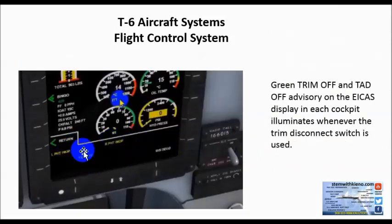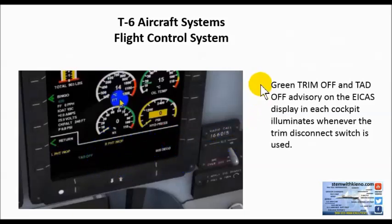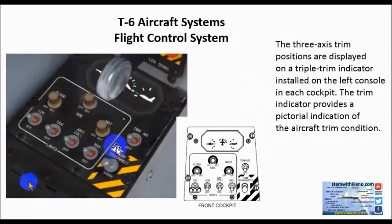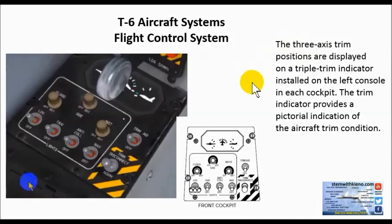In addition, on the enunciator panel and the EICAS — the engine indication and crew alert system — you'll see a display that illuminates whenever the trim disconnect switch is used. The three-axis trim positions are displayed on the triple trim indicator installed on the left console in each cockpit. The trim indicator provides a pictorial indication of the aircraft trim condition.